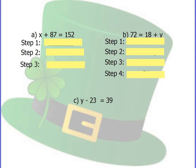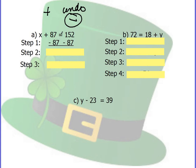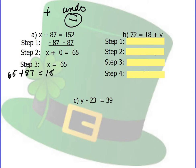Let's take a look at this in regards to our work. You have your first problem: x plus 87 equals 152. The operation I'm using is addition, so to undo it I need to use the inverse operation of subtraction. I'm adding 87, so to undo that I have to subtract 87. But what I do to one side, I have to do to the other. So I subtract 87 from both sides and I'm left with x plus 0 equals 65. Anything plus 0 is itself, so x equals 65. Let's check our work: 65 plus 87 should equal 152. 5 and 7 is 12, carry the 1; 6 and 8 is 14, plus 1 is 15. So 152 equals 152. ✓